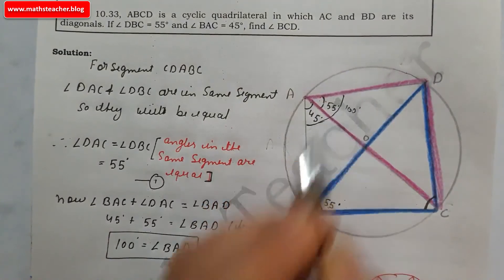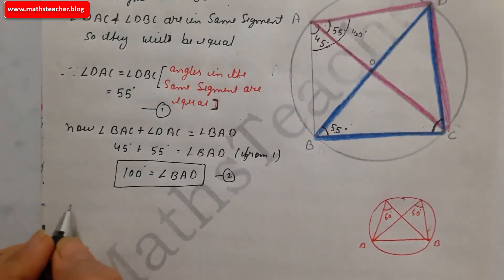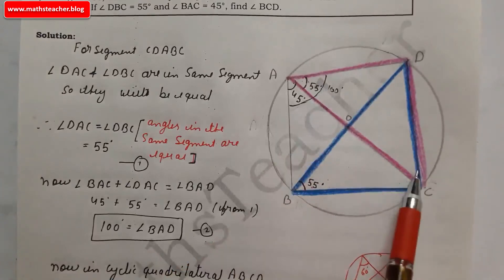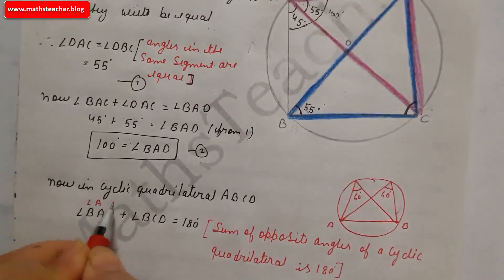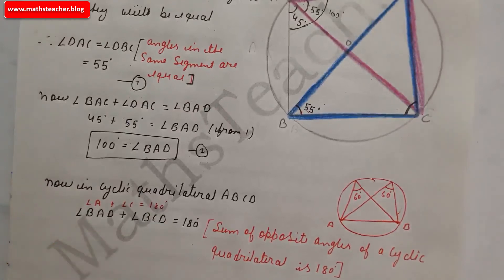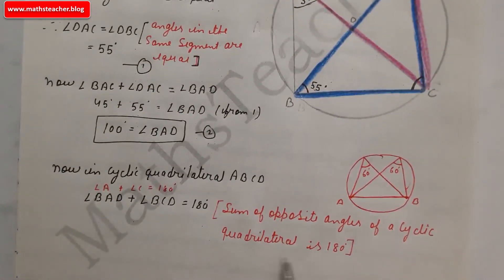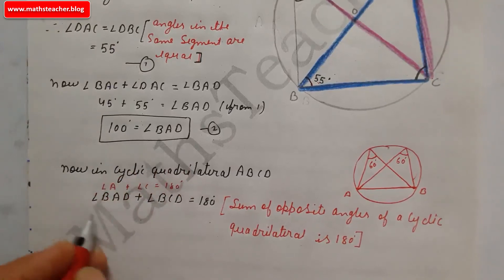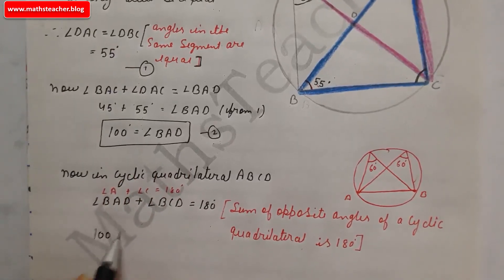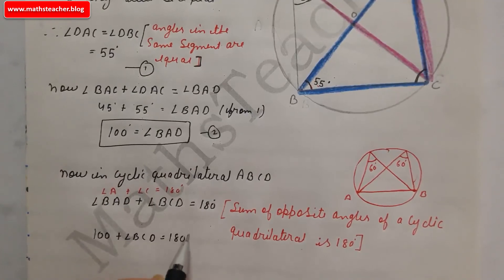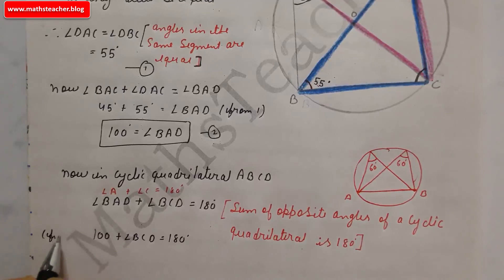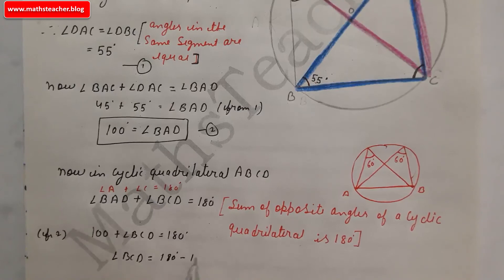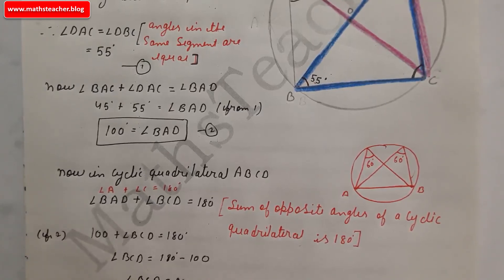Now we use the cyclic quadrilateral property. In cyclic quadrilateral ABCD, angle A plus angle C equals 180 degrees, because the sum of opposite angles of a cyclic quadrilateral is 180 degrees. So angle BAD plus angle BCD equals 180 degrees — substituting 100 degrees, angle BCD equals 80 degrees.